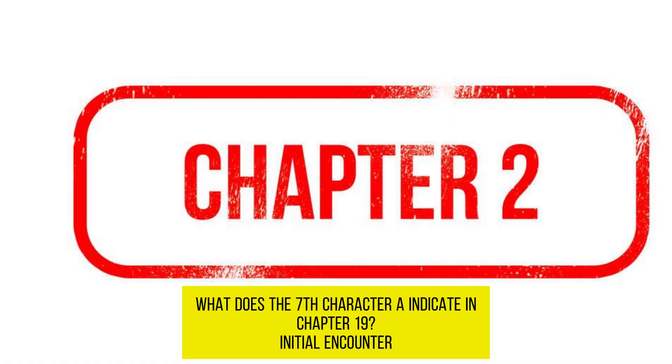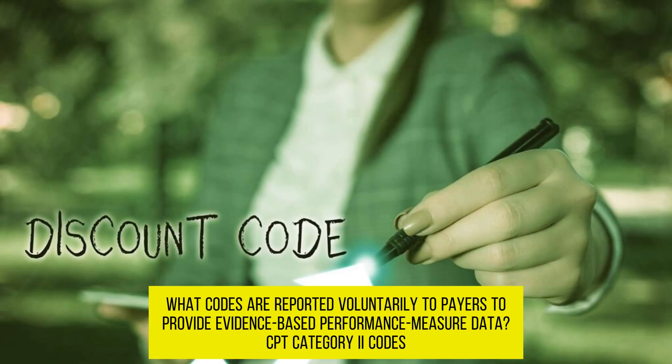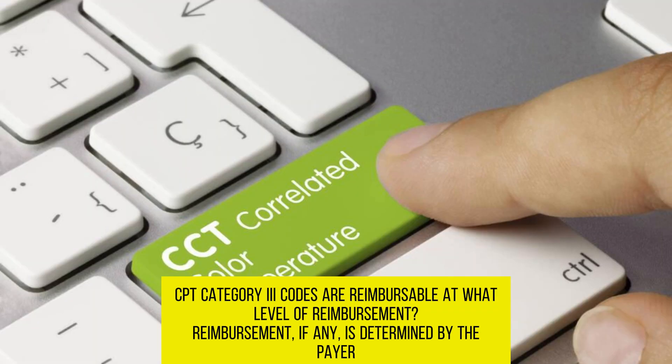What does the 7th character indicate in Chapter 19? Initial encounter. What codes are reported voluntarily to payers to provide evidence-based performance measured data? CPT Category 2 codes. CPT Category 3 codes are reimbursable at what level of reimbursement? Reimbursement, if any, is determined by the payer.